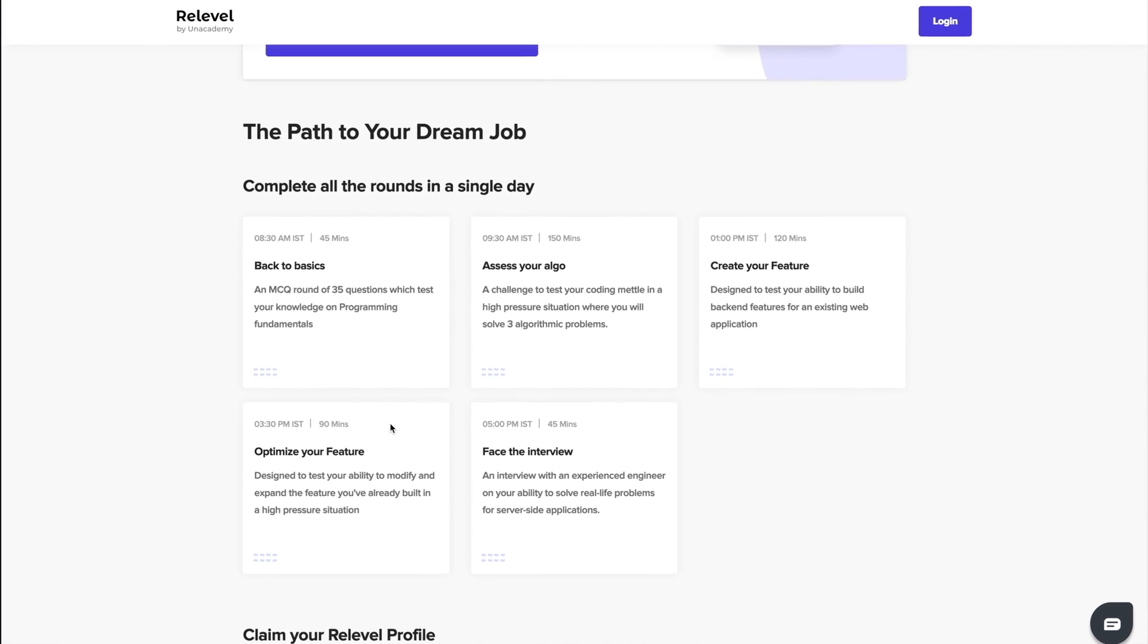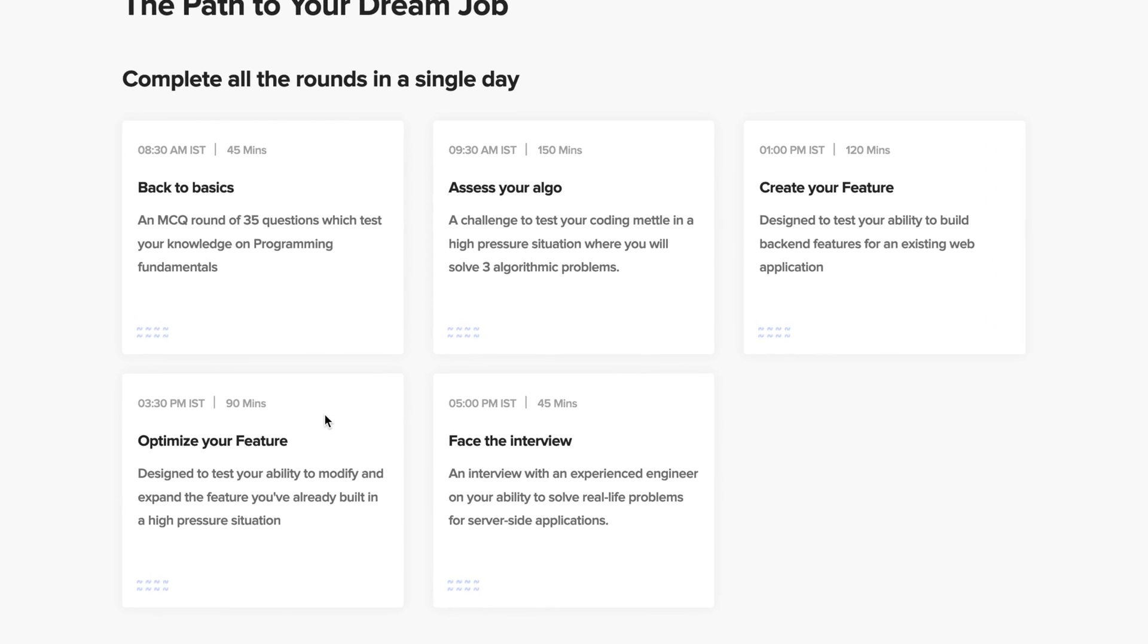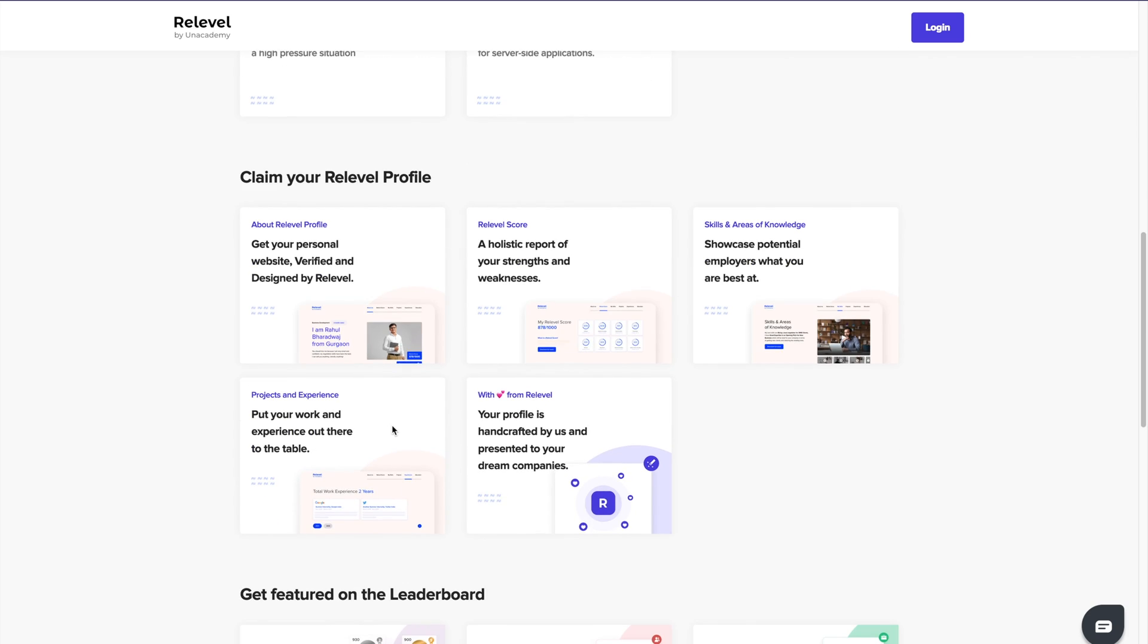So here's the solution to this problem. Relable by Unacademy is a hiring platform that helps freshers and experienced people to get jobs in India's top companies.